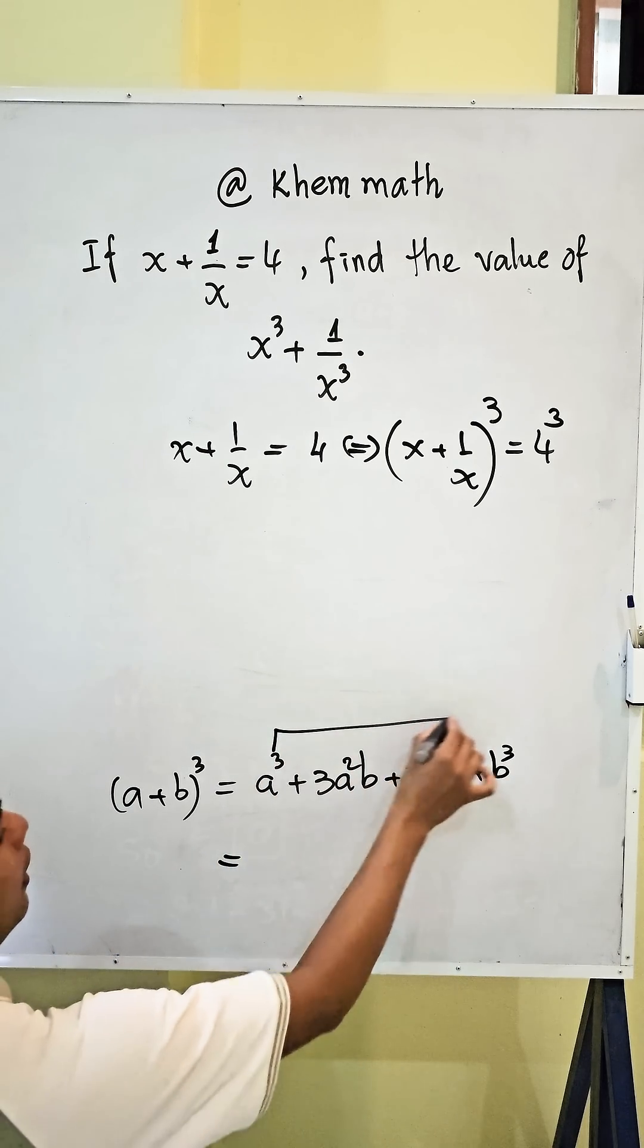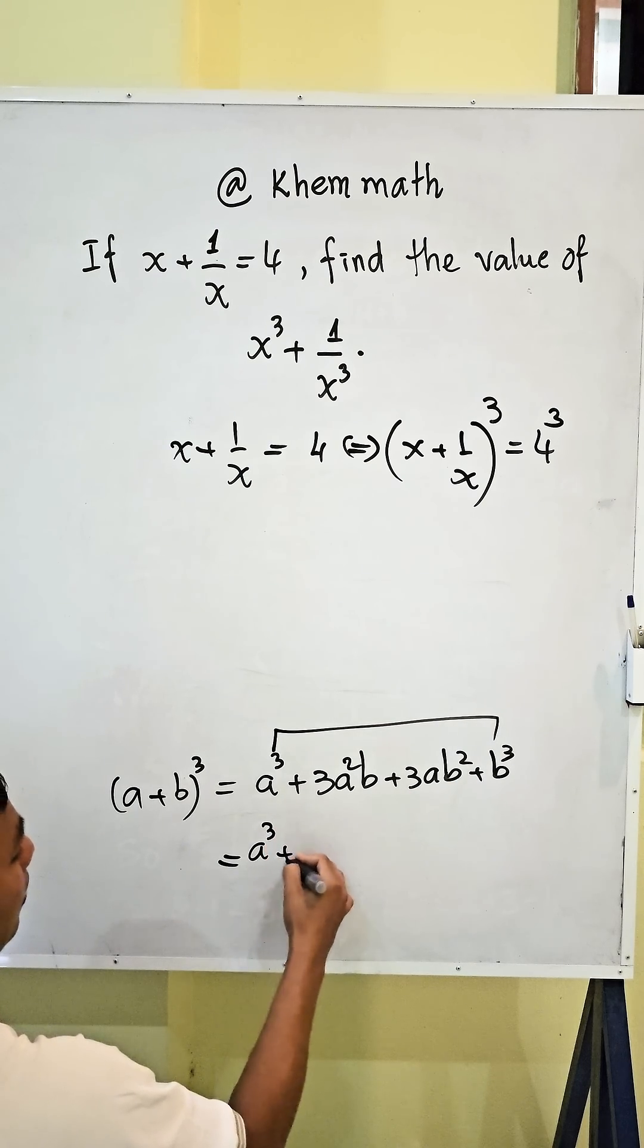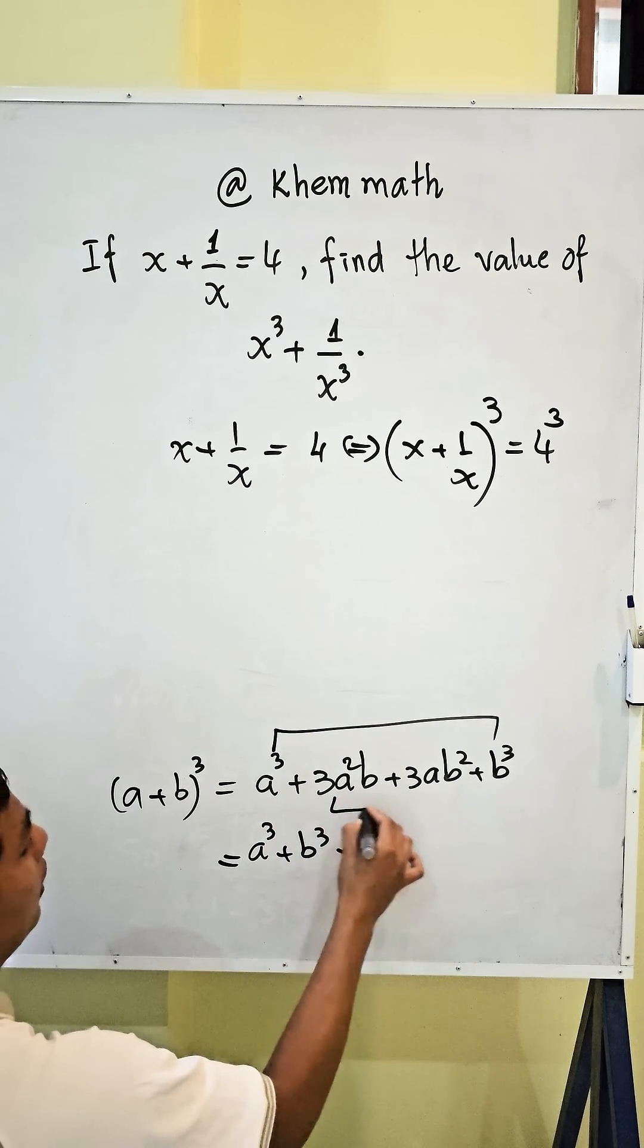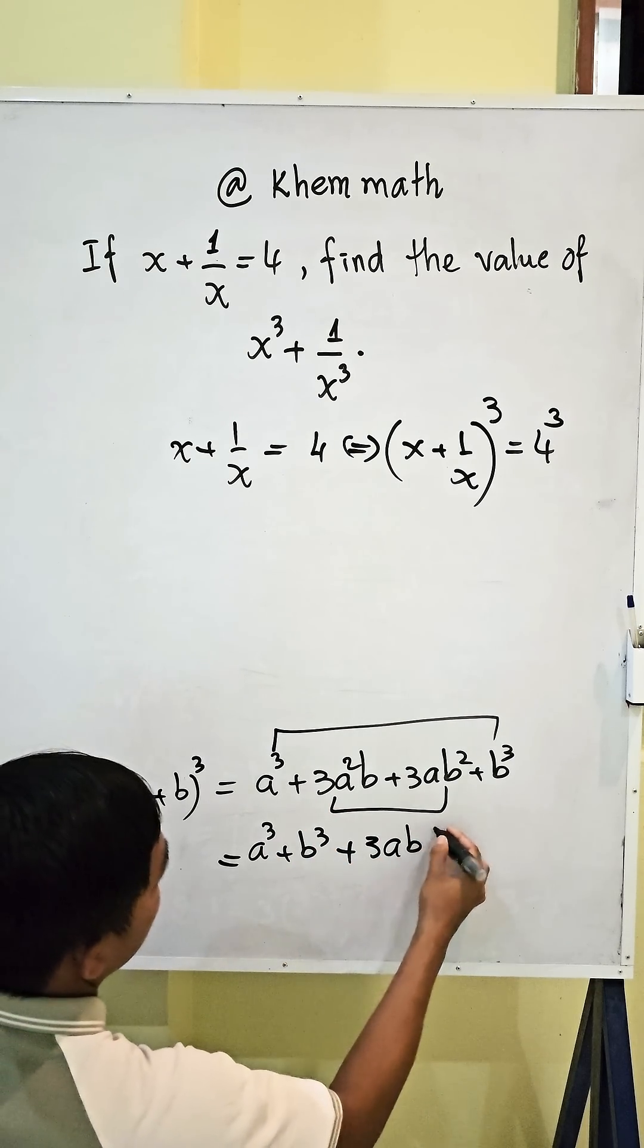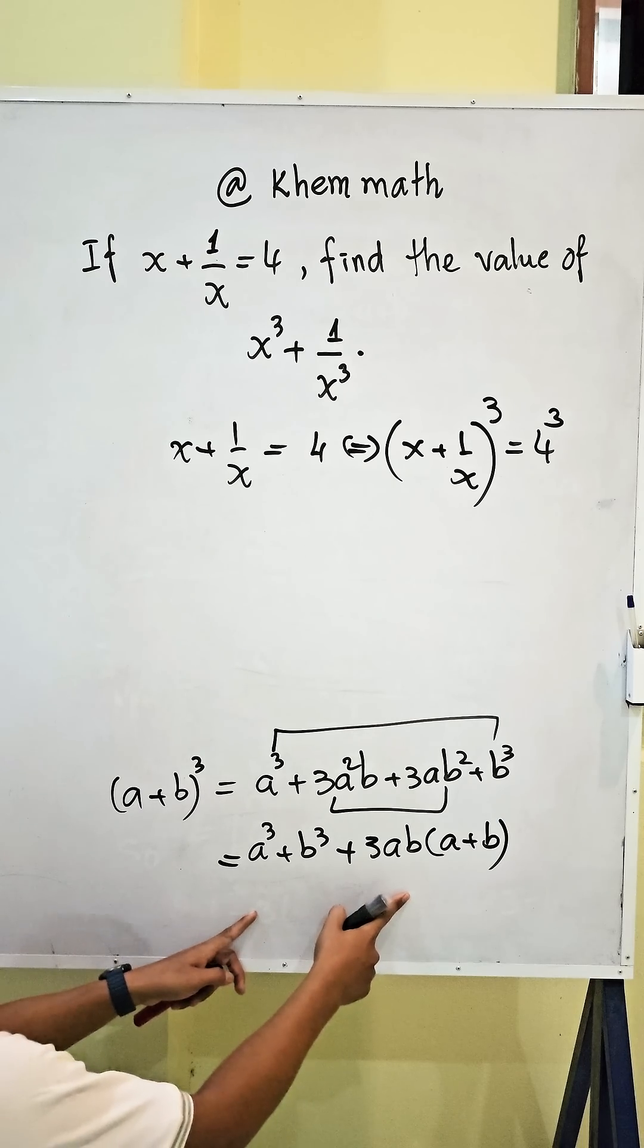Also equal a power 3 plus b power 3. Here we take 3ab as a factor. We get 3ab times a plus b. So here we use this.